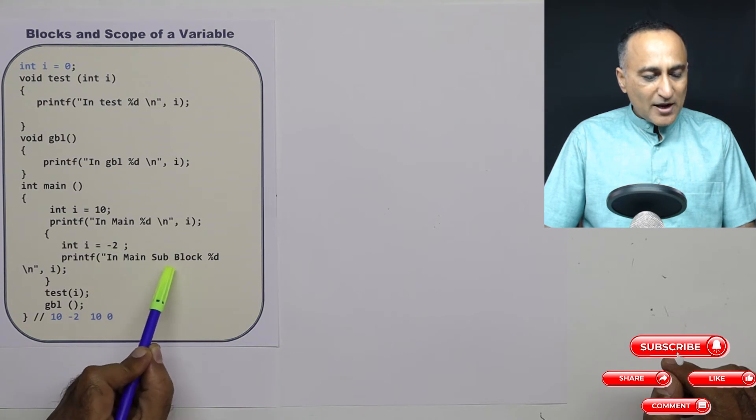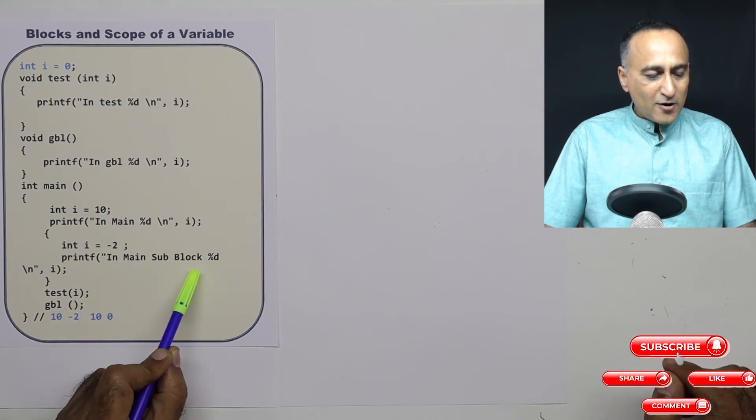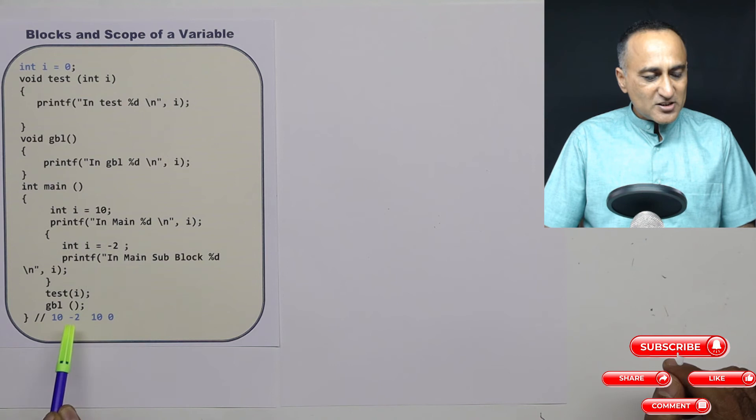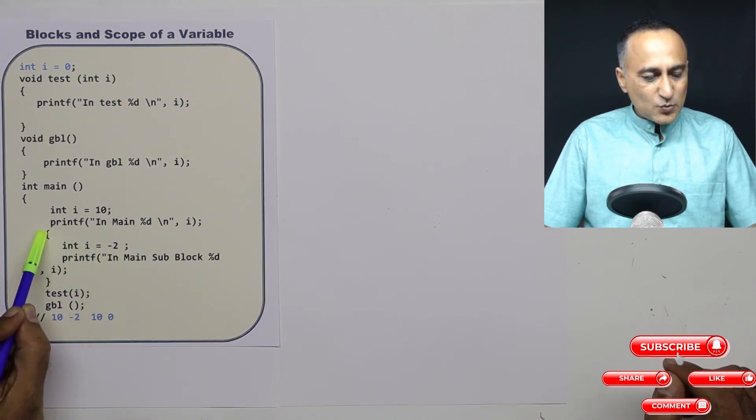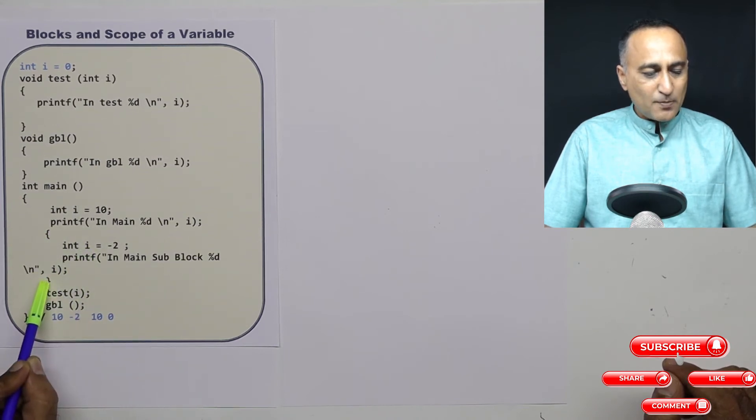Now if I print the value of i, the value of i going to be printed is minus two, because the scope of i is within this bracket. This i which is declared here has a scope within this particular block.